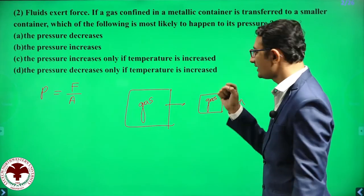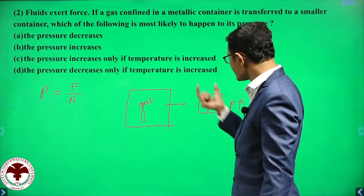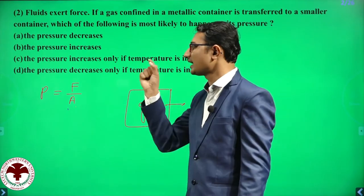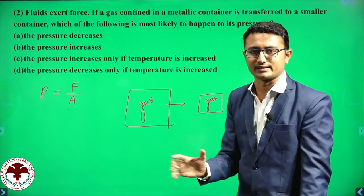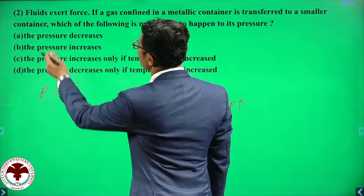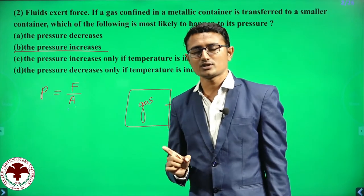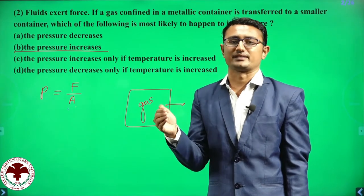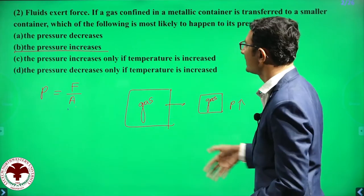Conceptually, when gas is transferred to a smaller container, the area decreases. Since P equals F over A and the denominator is decreasing, the pressure automatically increases. So the correct answer is: the pressure increases. In the NMET examination, you need concept-based knowledge — not many formulas, just solid understanding of concepts.